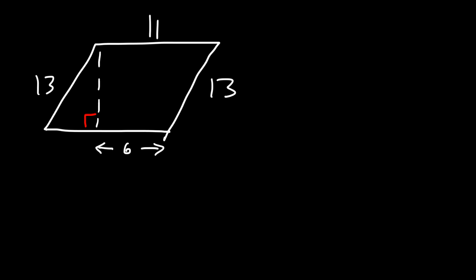What we need to do is find the height. Now, if this side is 11, then this side must also be 11. 11 minus 6 is 5, so this section is 5. Now let's focus on the right triangle that we see here.